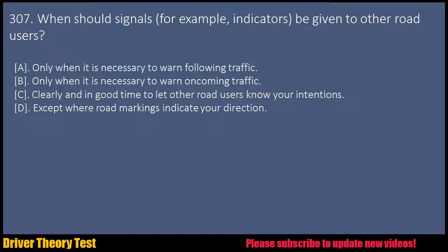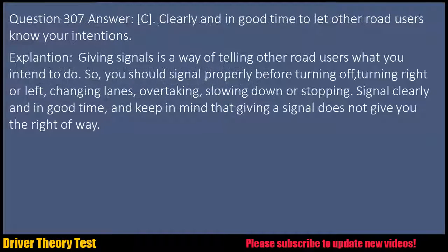Question 307: When should signals, for example indicators, be given to other road users? a. Only when it is necessary to warn following traffic. b. Only when it is necessary to warn oncoming traffic. c. Clearly and in good time to let other road users know your intentions. d. Except where road markings indicate your direction. Question 307 Answer: C. Clearly and in good time to let other road users know your intentions.